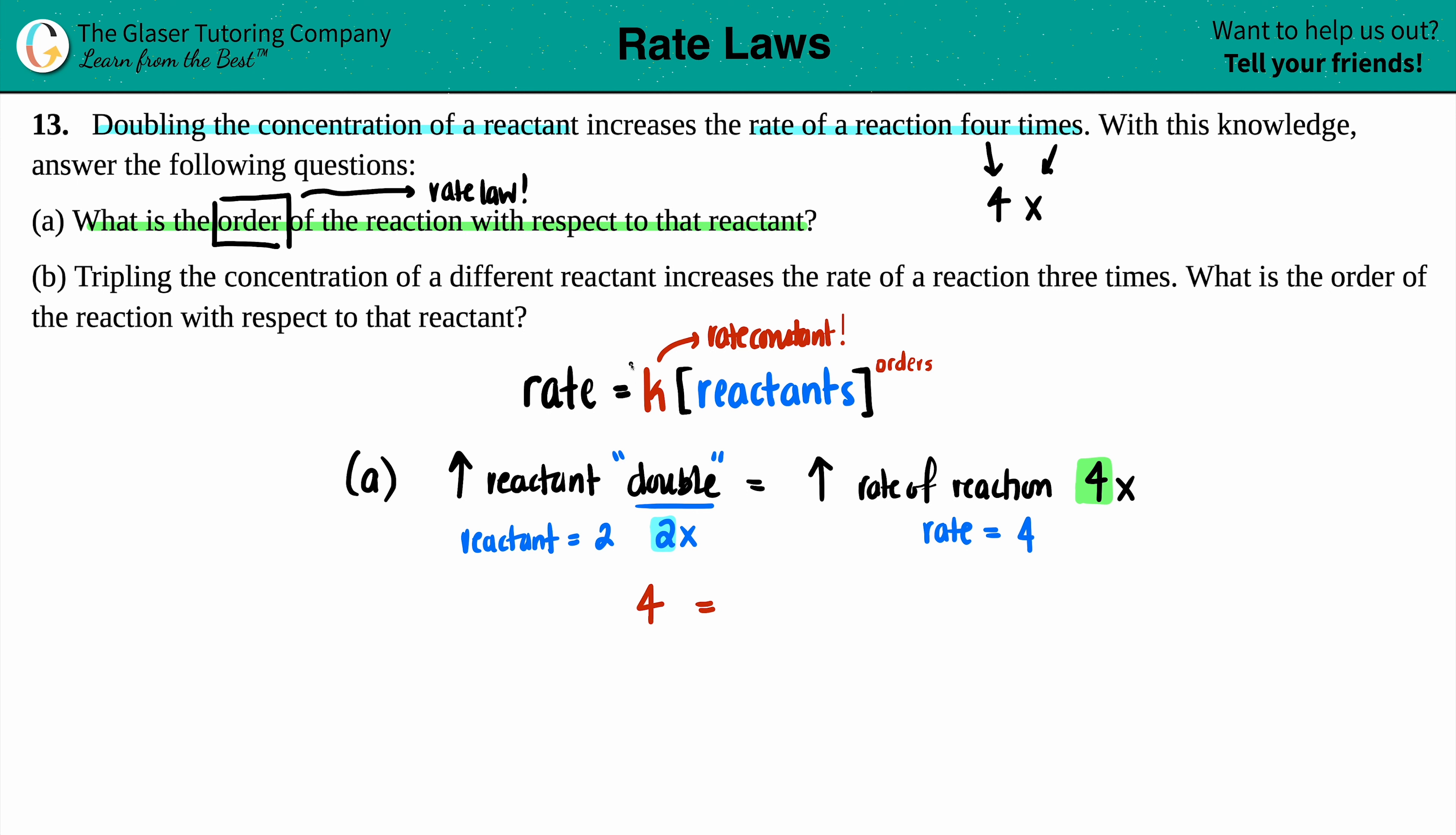So for this type of idea, where we're just comparing reactants with the rate, you don't have to worry about the K. So my rate equals four, equals, get rid of the K, and the concentration of the reactant, the reactant said that it doubled, so I'm going to put a two there. And now I just need to find out what that order is. It's always raised to the orders. So, X.